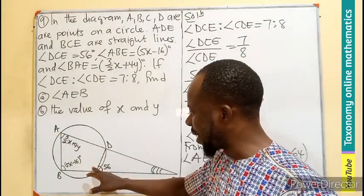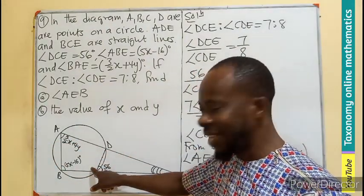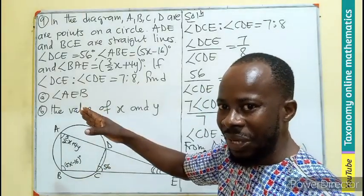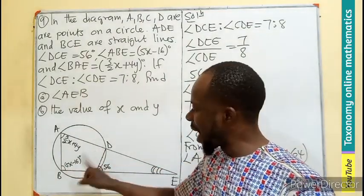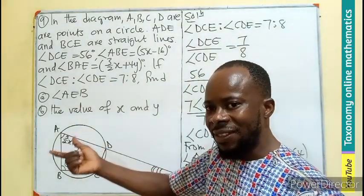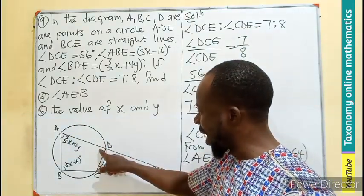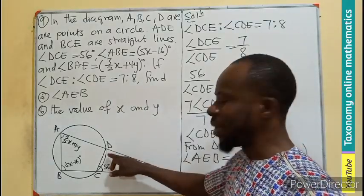Now we need to also know that we can be able to add this and this very angle to be equal to 180. The opposite angles of a cyclic quadrilateral add up to 180. So I will add this very angle plus this to be 180.